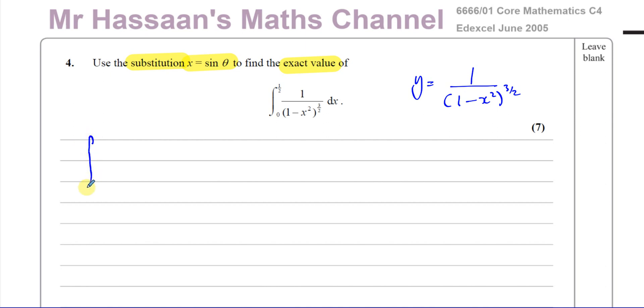Now y is the whole thing that I'm integrating, which is 1 over (1 minus x squared) to the power of 3 over 2. So I'm going to integrate y with respect to x between the limits. When we're doing substitution, that is our objective.